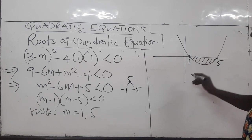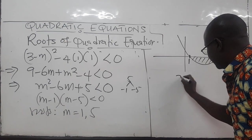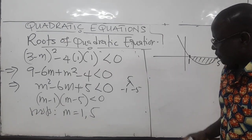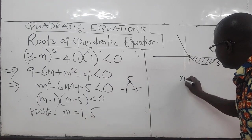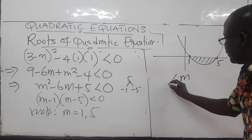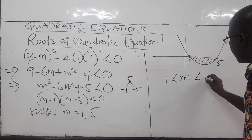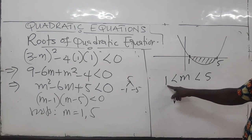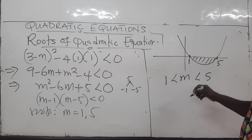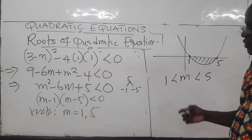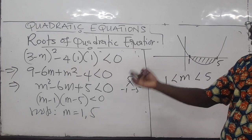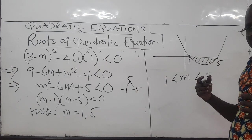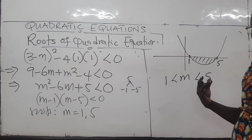So from this, we can state that M in this case must lie between 1 and 5. The values of M greater than 1 and less than 5 will be the set or the range of values of M for which the quadratic equation will be positive for all values of X.